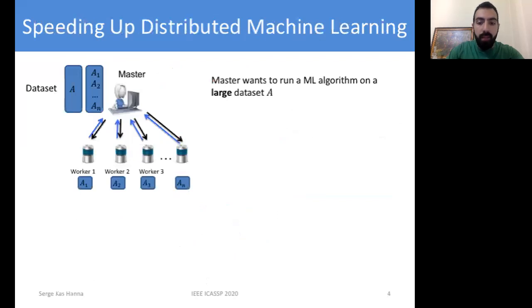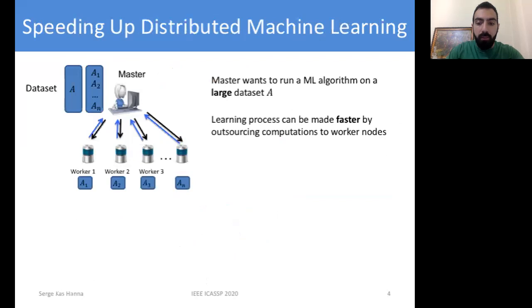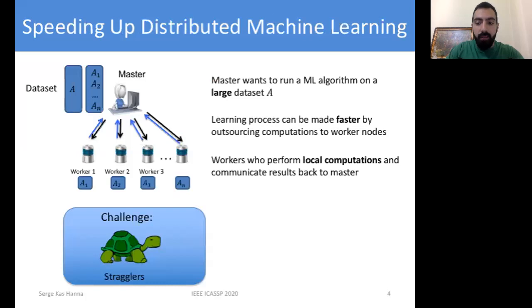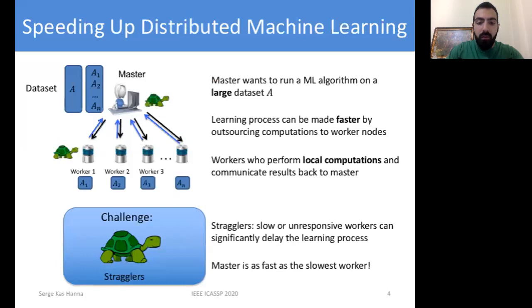Consider a setting where a master wants to run a machine learning algorithm on a large data set A. If the data set is too large, the learning process can become computationally intractable. The master can outsource the computations to worker nodes by distributing the data among them in order to make the learning process faster. The main challenge I will focus on is the straggler problem: stragglers are slow or unresponsive workers that can significantly delay the learning process, because the master needs to wait for all workers to complete their local computations.